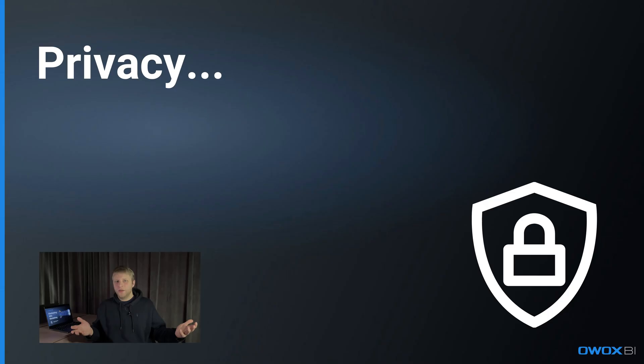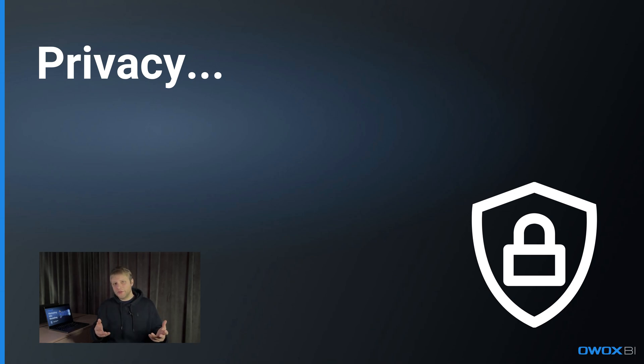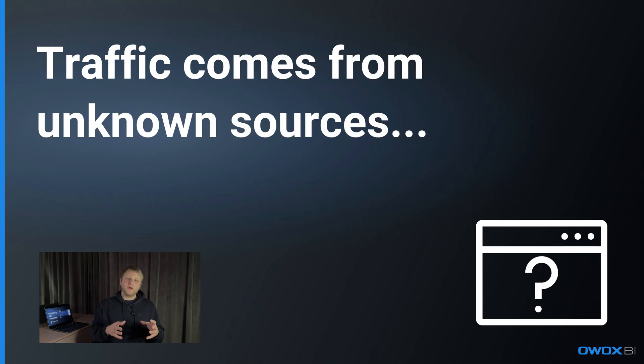Plus, some of those platforms attribute more conversions to themselves than they deserve. Why? Privacy. Traditional pixel-based tracking methods become less effective due to current privacy regulations. A significant proportion of traffic comes from unknown sources. This happens because of the limited lifespan of cookies in the browser, which leads to losing the connection between website conversions and user sessions from the original traffic source. As a result, marketers had to act blindly when allocating ad budgets, missing on growth opportunities.